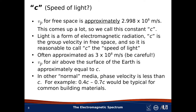Now, we can answer the question: what is the value of the phase velocity? In free space, phase velocity is approximately equal to 2.998 times 10 to the eighth meters per second. This constant comes up a lot, so we give it a label, namely C. Now, light is a form of EM radiation, and it also turns out that phase velocity equals group velocity in free space. So it is common to refer to C as the speed of light.